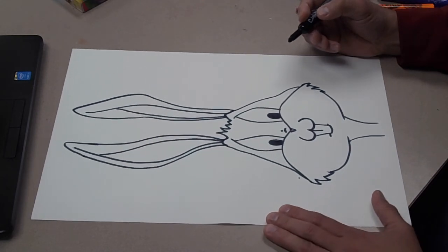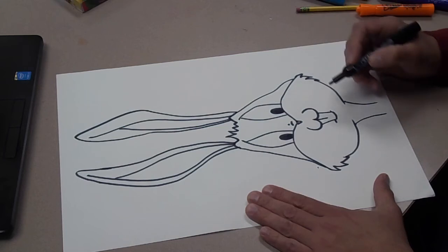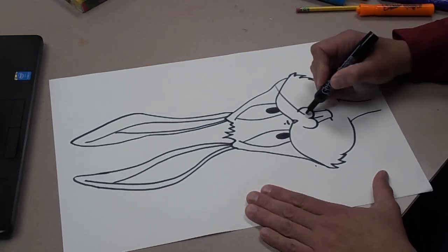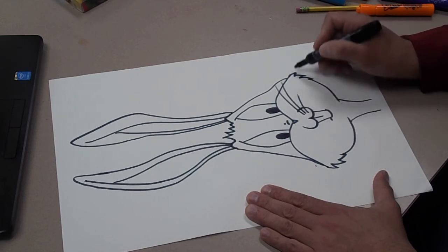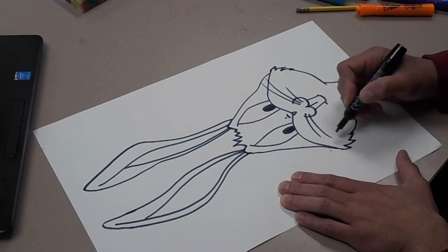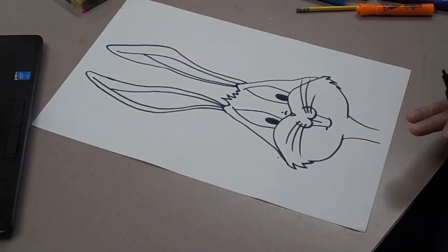So the last thing to do to put some finishing touches on this is to add some whiskers. So three on each side. So I'll just hold on. Two, three. And one, two, three. And that is the drawing part of this.